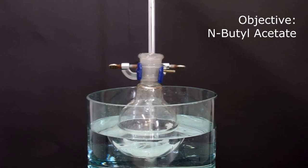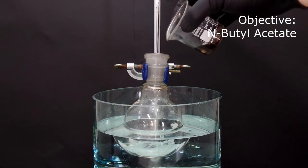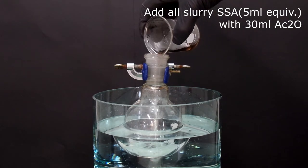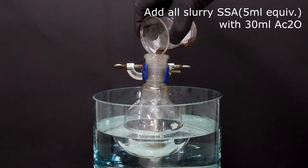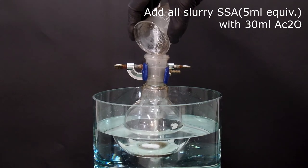In this esterification, I used acetic anhydride and n-butyl alcohol for n-butyl acetate, which has a smell of apple and banana. On the round bottom flask, I put all the slurry silica sulfuric acid mix and washed the beaker with 30 ml of acetic anhydride.